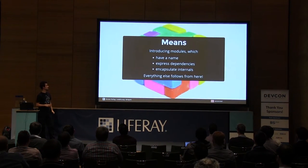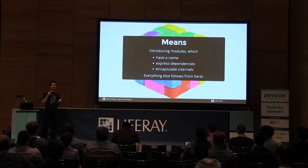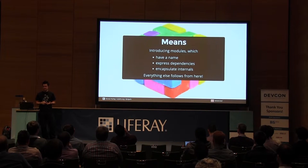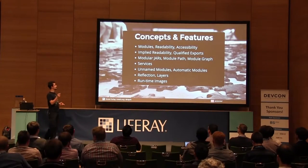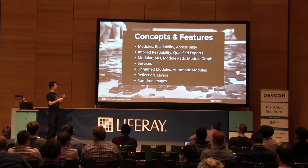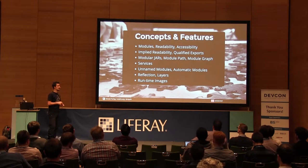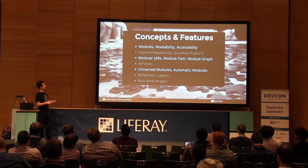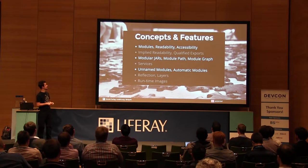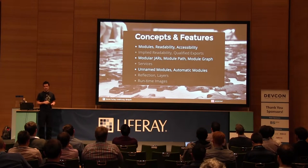So how does Jigsaw plan to do all this? Again, the things I said in the beginning: we want to have a name, we want to have clearly defined dependencies, and we want to encapsulate internals. Everything else follows from there. There are a bunch of features — this is not even complete, a lot of things got added over the last couple of months. We're not going to look at all of that. We'll start with the basics and see how far we get.